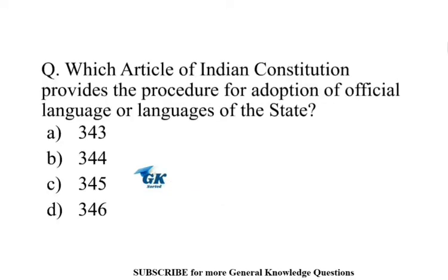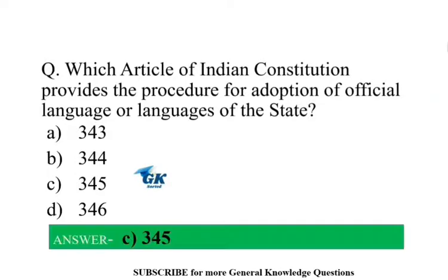Which article of the Indian Constitution provides the procedure for adoption of the official language or languages of a state? Article 345.